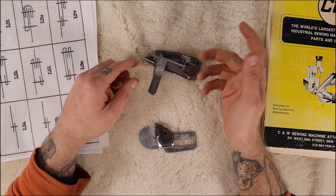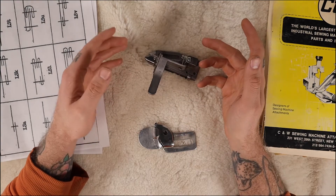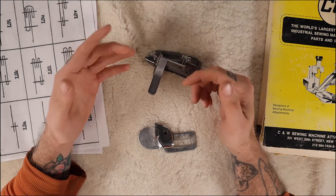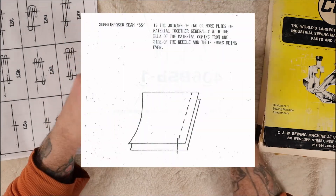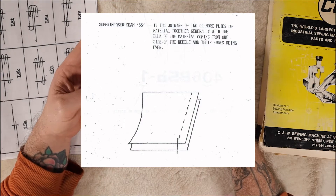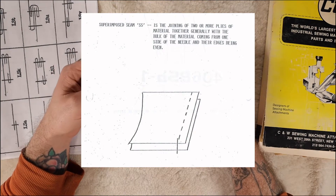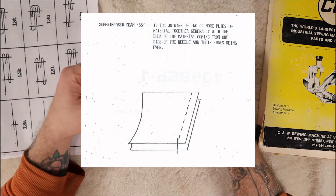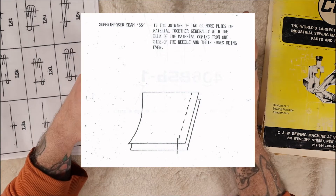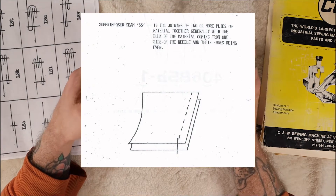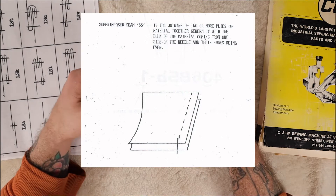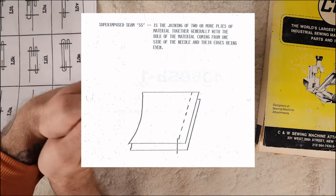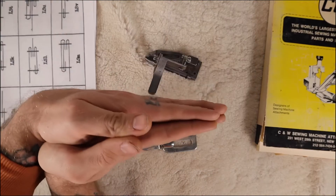The first, superimposed or SS seam, is when two or more plies are joined together with one or more rows of stitching, and generally the edges are even.